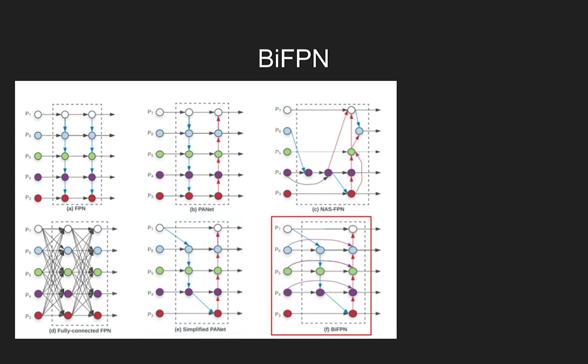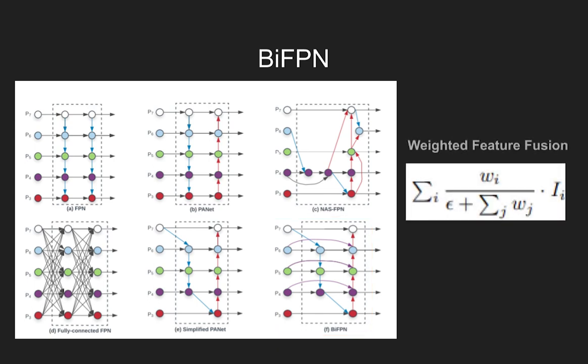Lastly, unlike PANET that only has one top-down and one bottom-up path, a bidirectional path is treated as one feature network layer and repeats the same layer multiple times to enable more high-level feature fusion. The final proposed BiFPN architecture is shown in Figure F. A weighted feature fusion is utilized when the features are fused together. Since different input features at different resolutions contribute unequally to the output feature, additional weight for each input acts as a scaling factor when the feature fusion is made.